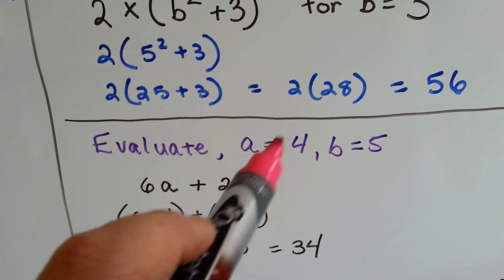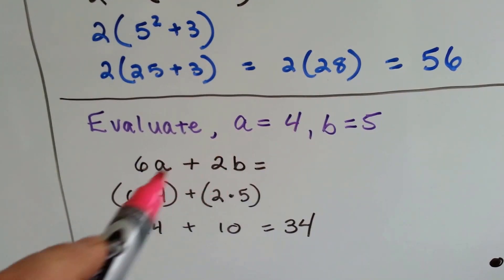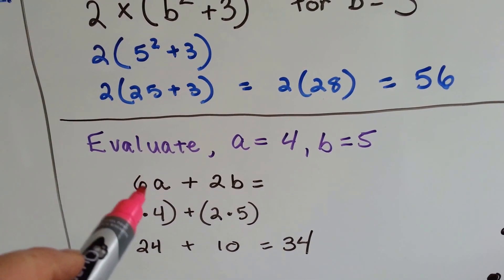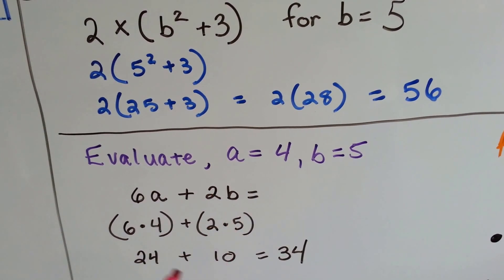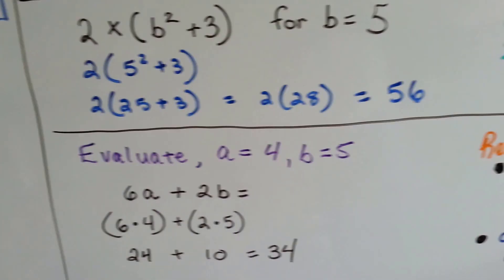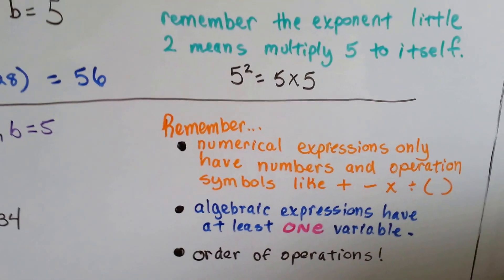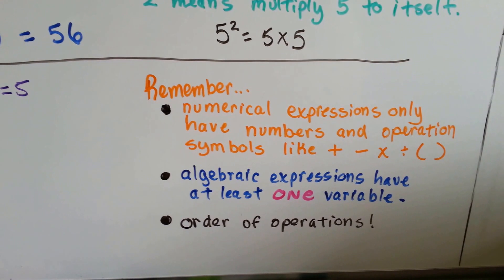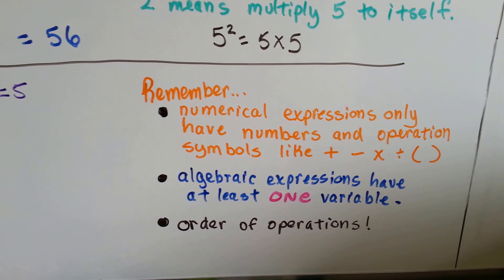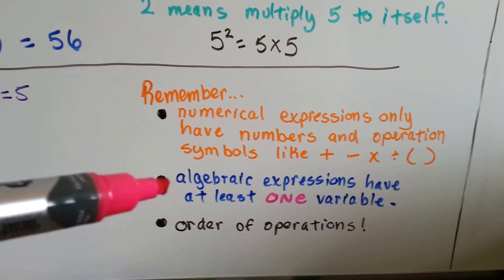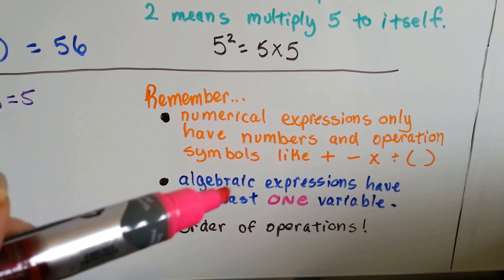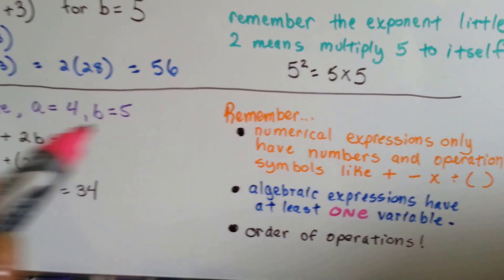What if a equals 4 and b equals 5? We plug them in so the numbers replace the variables in the expression: instead of 6a we have 6 times 4, and instead of 2b we have 2 times 5. We do them and add them together: 24 plus 10 equals 34. Remember, a numerical expression only has numbers and operation symbols — plus, minus, multiply, divide, parentheses. It becomes an algebraic expression when it has at least one variable — a letter of the alphabet. That's the difference between the two.